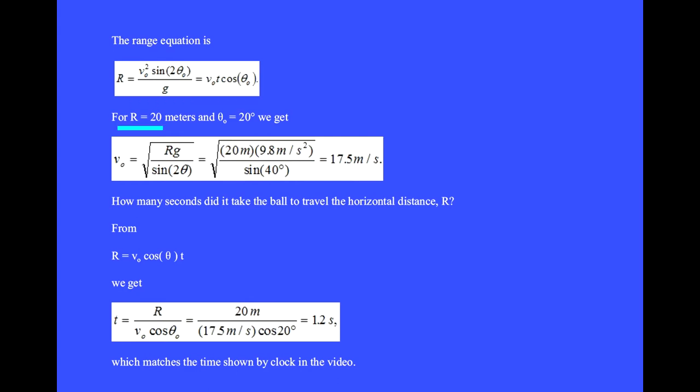For a range R of 20 meters and a launch angle θ₀ of 20 degrees, we get v₀ = √(Rg/sin(2θ)) = √(20 m × 9.8 m/s² / sin(40°)) = 17.5 m/s.